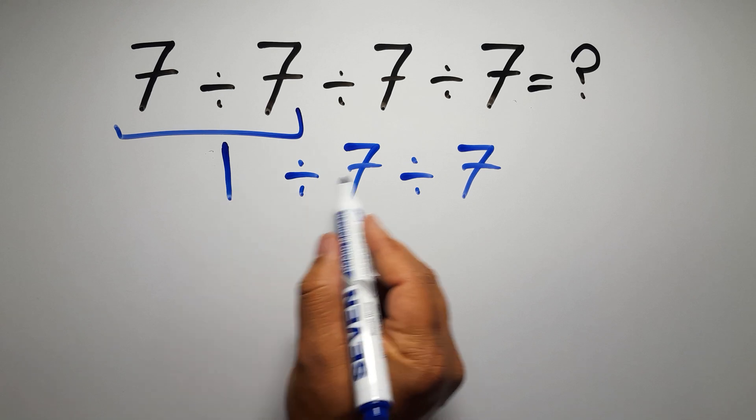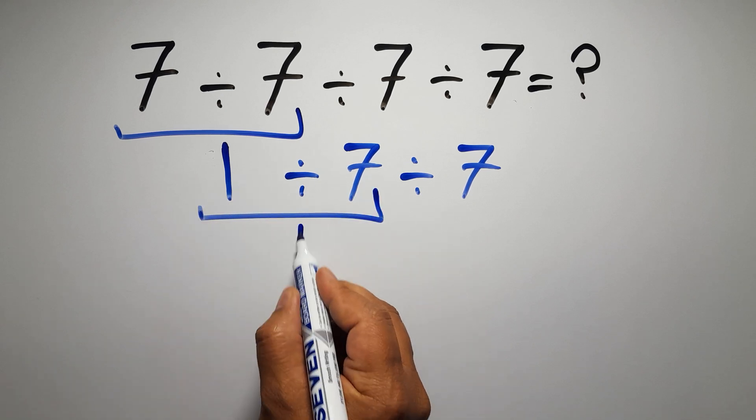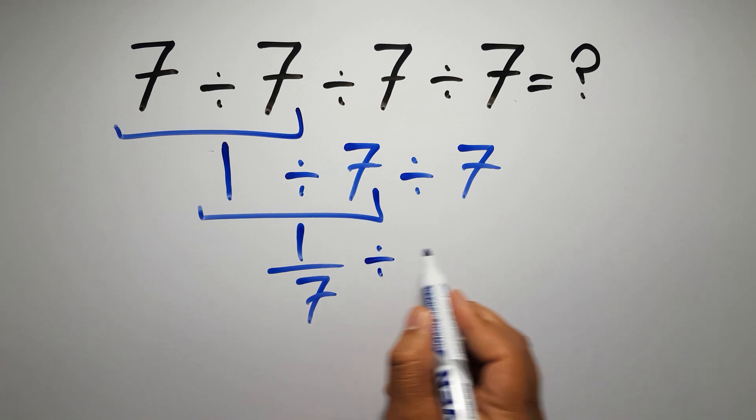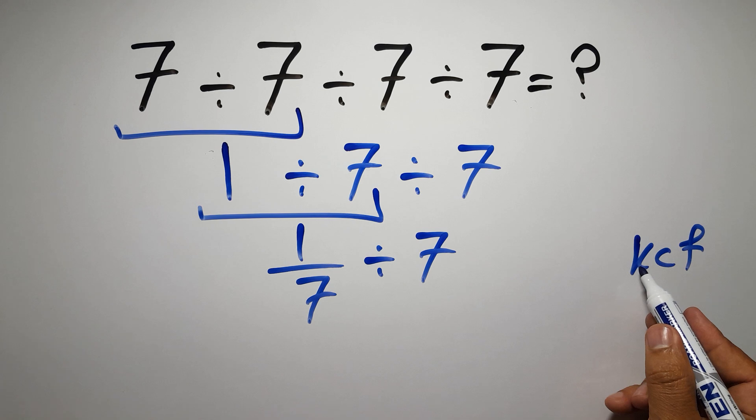Now we have to do this division. 1 divided by 7 can be written as 1 over 7, so 1 over 7 divided by 7. According to the KCF rule, K stands for keep, C stands for change, and F stands for flip.